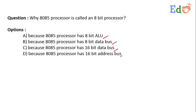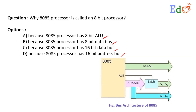Conventionally, an n-bit processor means the bus width — that is, n refers to the bus size or bus width. We know that the 8085 microprocessor has an 8-bit ALU, which is true, and it also has a 16-bit address bus, which is also true. However, the bus width of the ALU and the address bus does not imply the bit width of the processor.